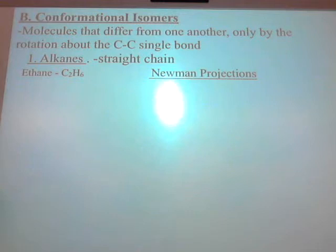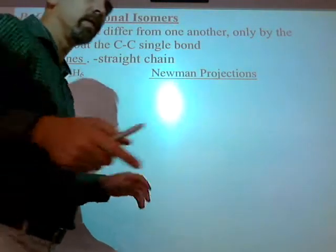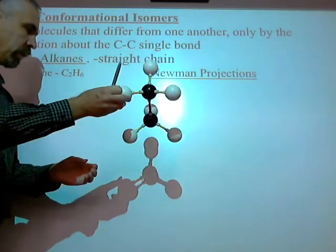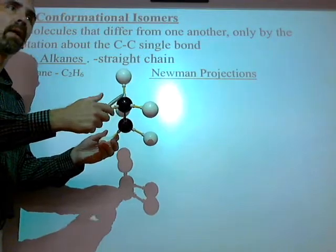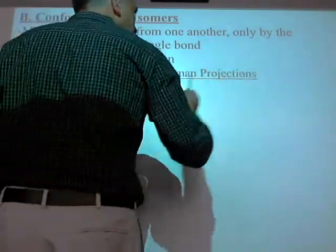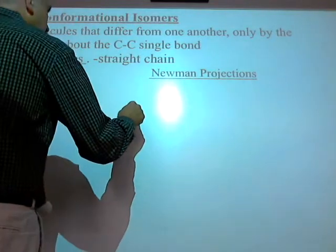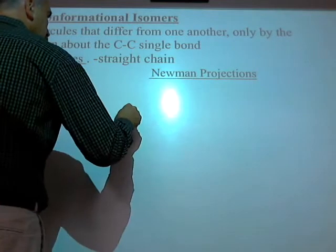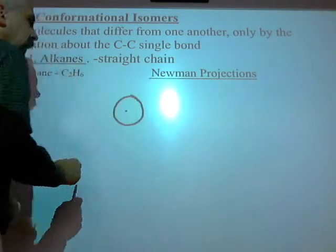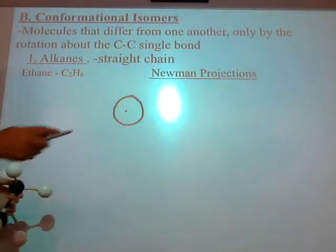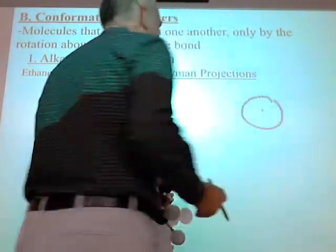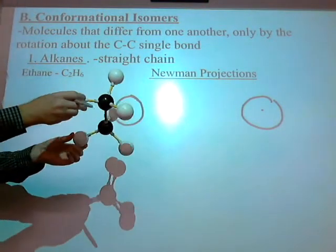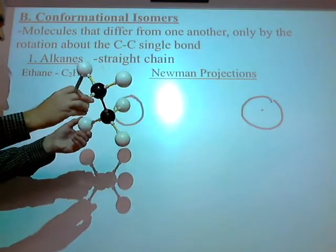So if I'm drawing C2H6, I want to pretend that I'm looking directly down one of those two carbons. I'll make the first carbon a dot and the second carbon a circle. So let's make one guy a dot and one guy a circle. There's my dot and there's my circle, and I'm going to make a dot and a circle over on this side too. I'll do the staggered conformation first.